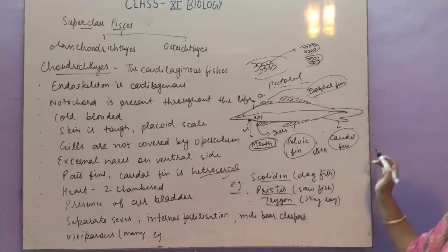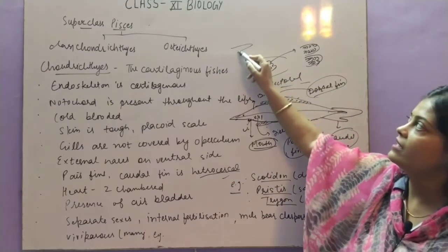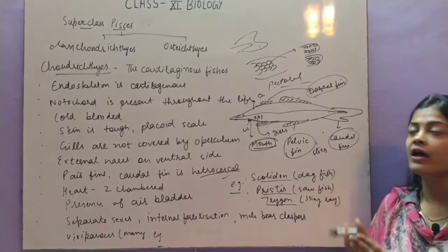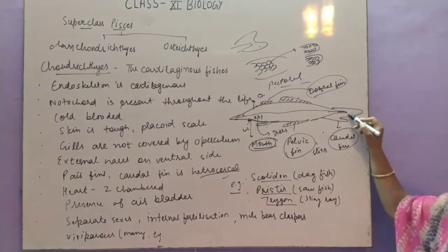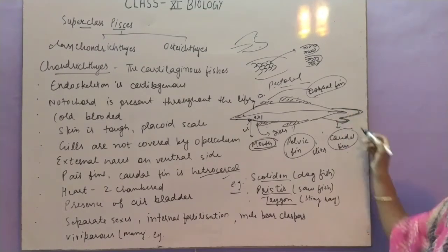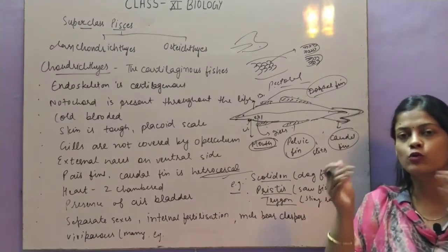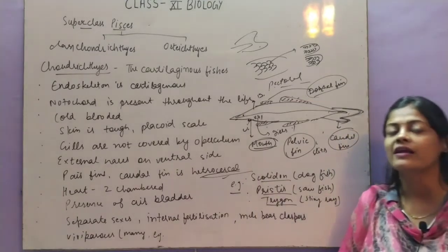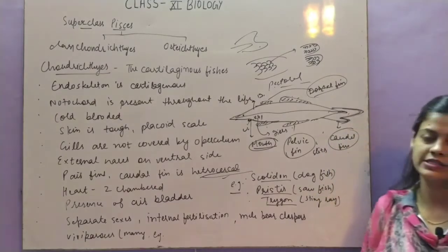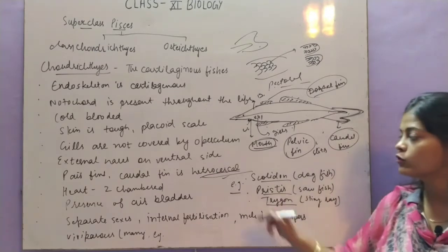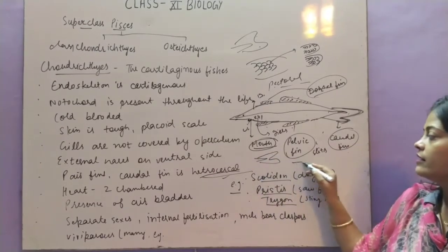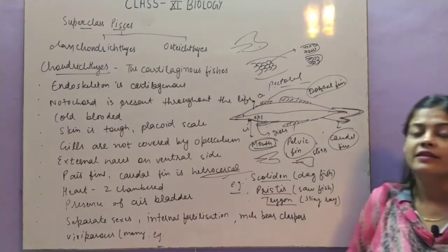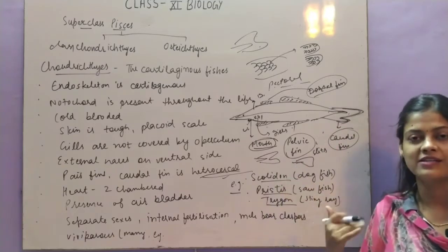The caudal fin is heterocercal. Heterocercal means the two sides of the fin are not equal — one part is bigger and one is smaller. If the two folds of the fin are equal it is called homocercal. If the partition exists but the two parts are unequal in size, then it is heterocercal. In Osteichthyes the fin can be homocercal or may not be divided at all.